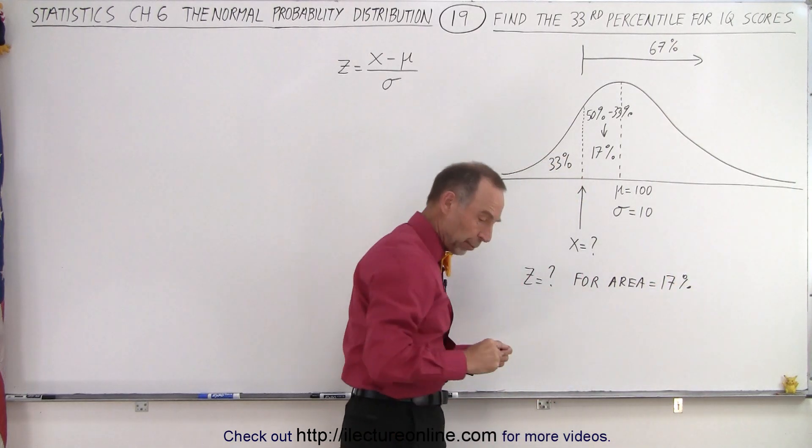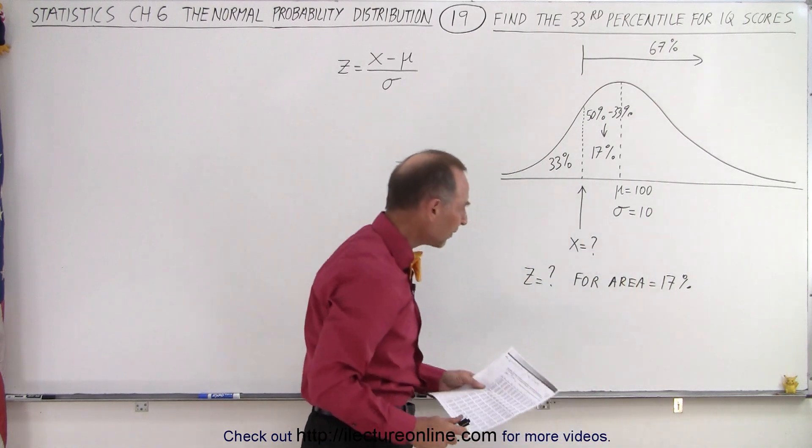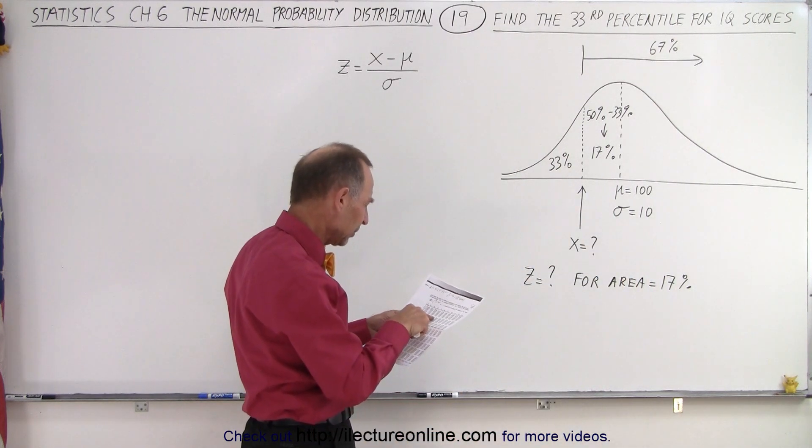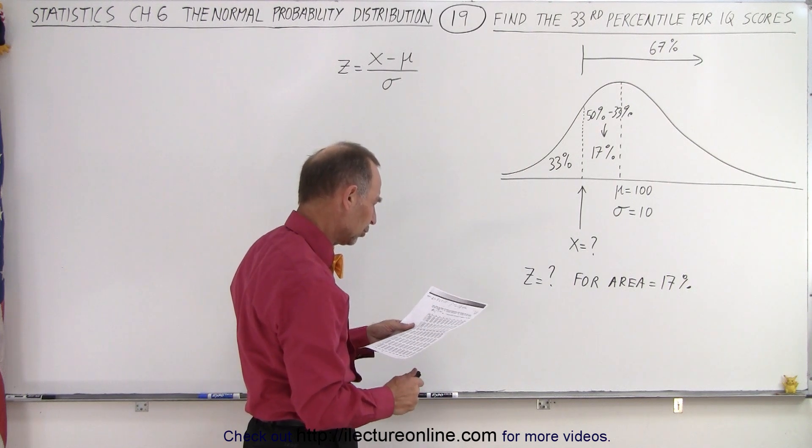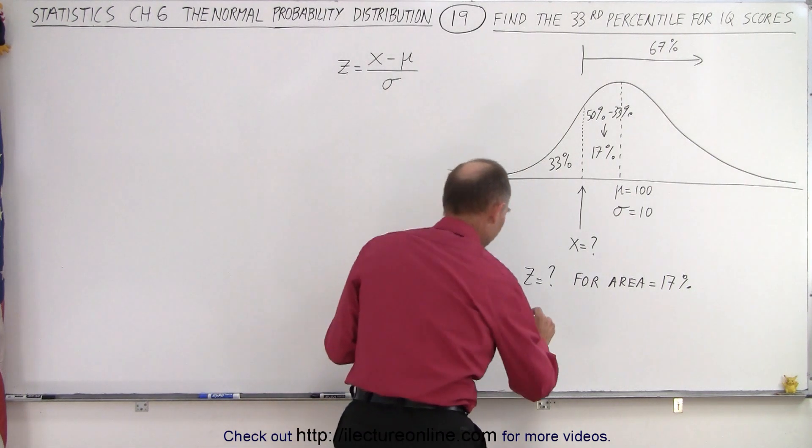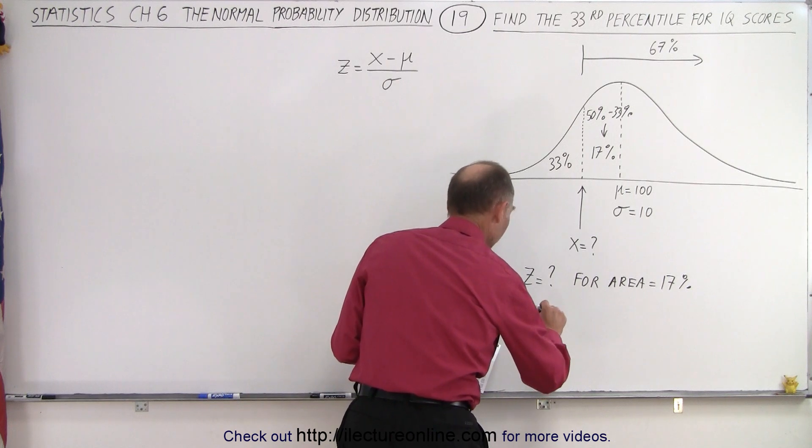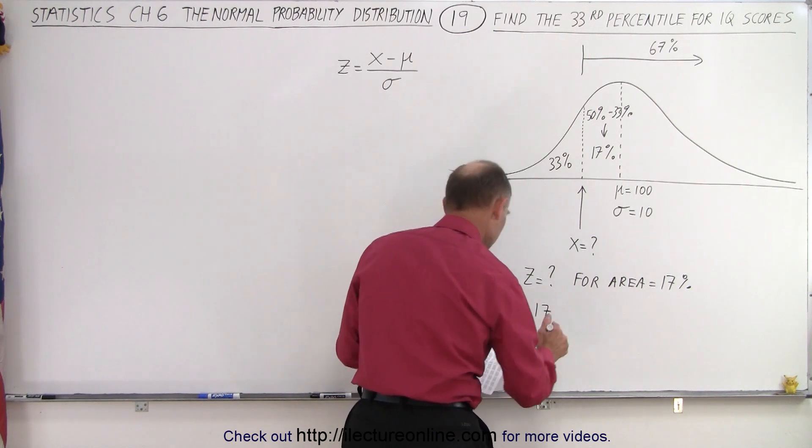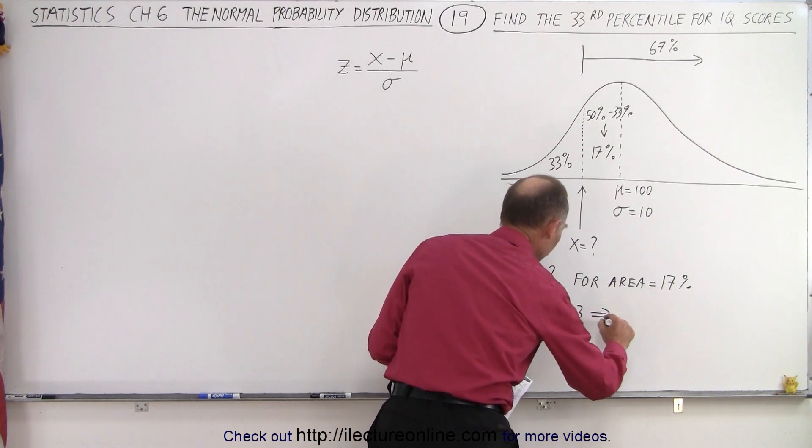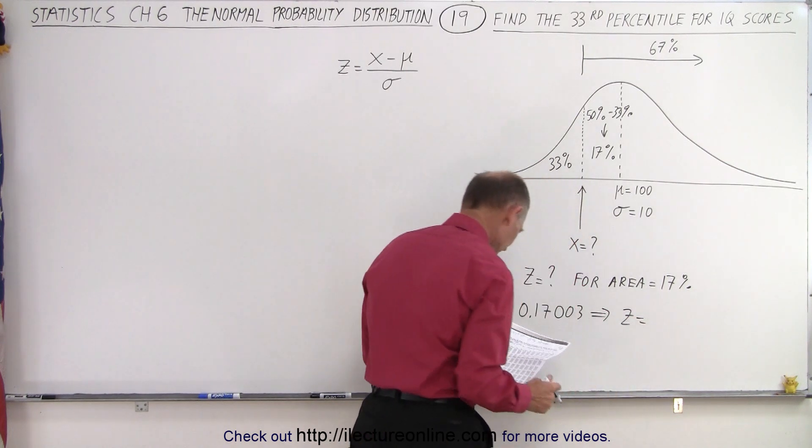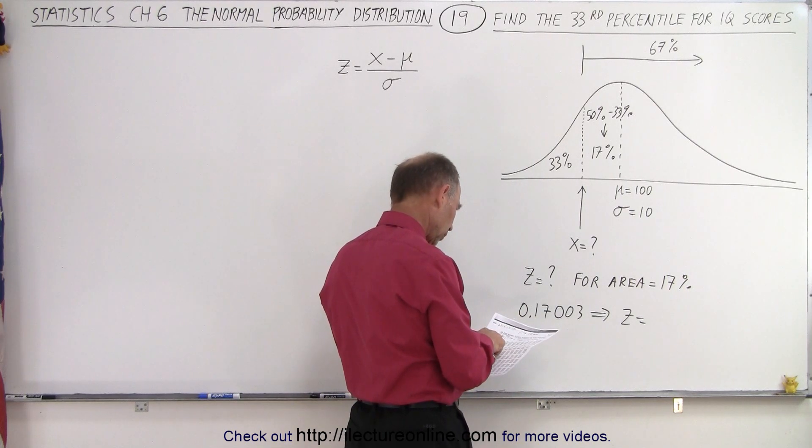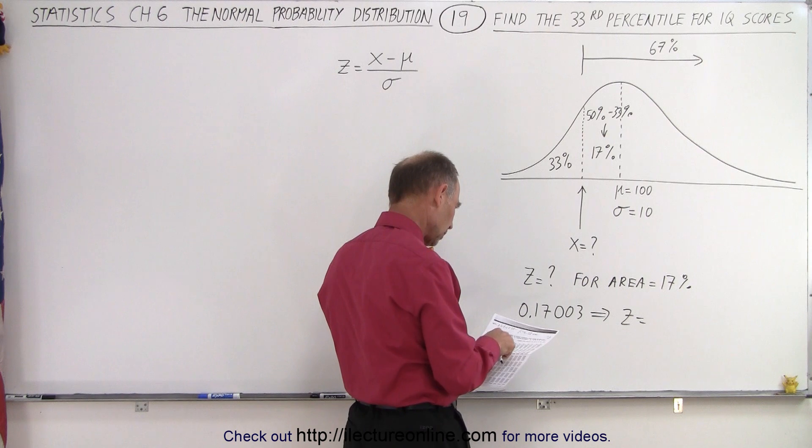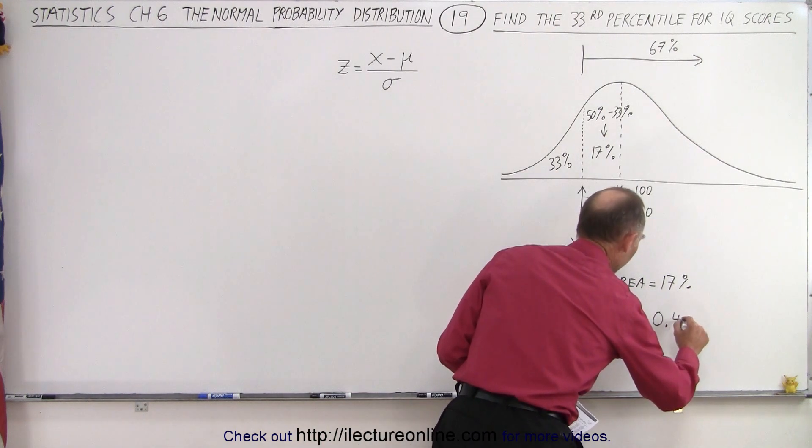So what we're going to do here is go back to our table, find the 17% in the table. Notice I find something that's very close. For an area of 0.17003, that corresponds to a Z factor equal to 0.44.